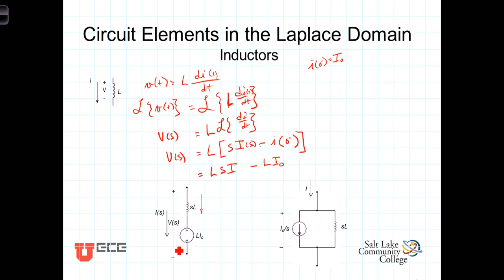If you stop and think about it, we can write a KVL around this loop right here. Starting with V of S, it would be negative V of S coming up and then going down. The current is I of S. Going in the direction of current flow, it would be plus S L I of S.